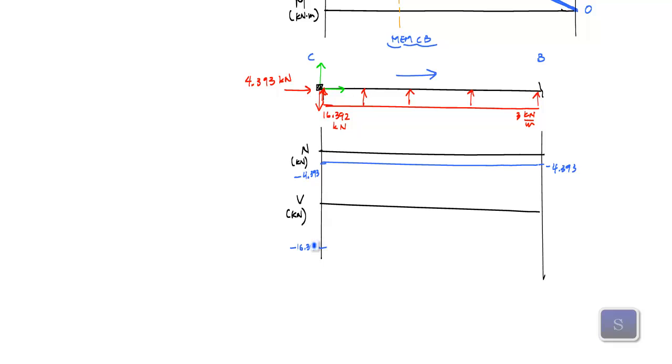My shear diagram would have started at negative 16.392 and then increased because I'm pointing upwards now, right? I would have increased 24 kilonewtons up to that 7.608 and this distance here would have been that 2.54.